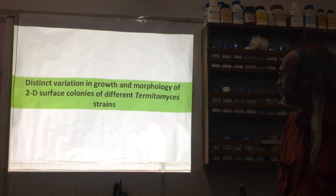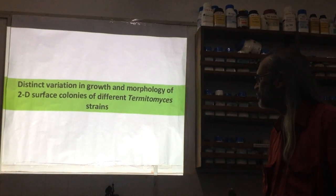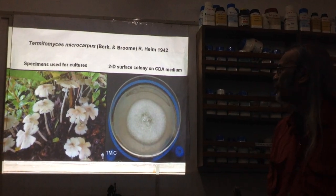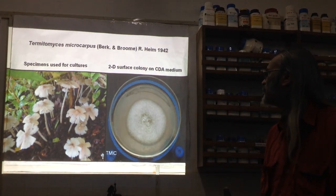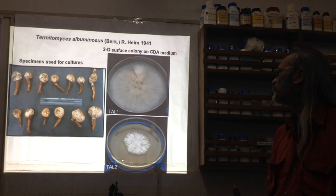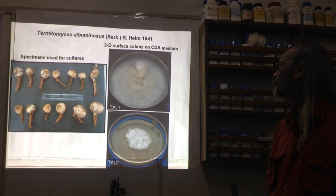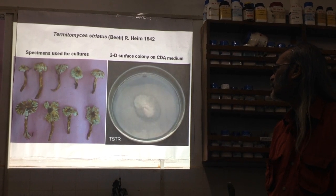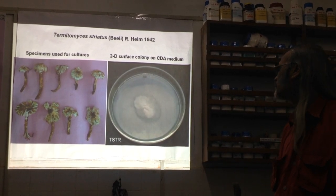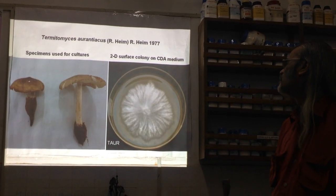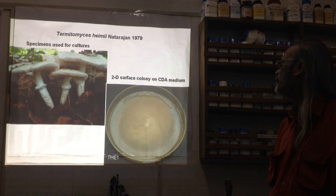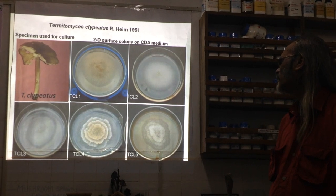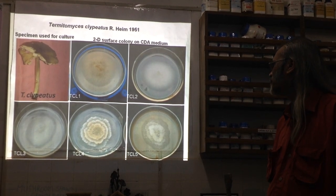First, results of two-dimensional surface colonies of various strains of Termitomyces are presented: microcarpus as found in the field and its pure 2D culture; albuminosus specimens and their fully grown colonies; striatus with beautiful striated specimens; aurantiacus; two strains of hymii; globulus; and clypeatus. From clypeatus, different strains 1, 2, 3, 4, and 5 were obtained.